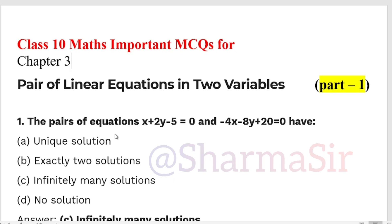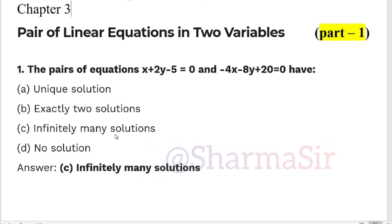Let us prepare. First question is, the pair of equations x+2y-5=0 and -4x-8y+20=0 have: unique solution, exactly two solutions, infinitely many solutions, or no solution. We have infinitely many solutions. I have already given the correct answer. So if you know this question, we will skip the question. If you don't know the answer, we will return to this solution.